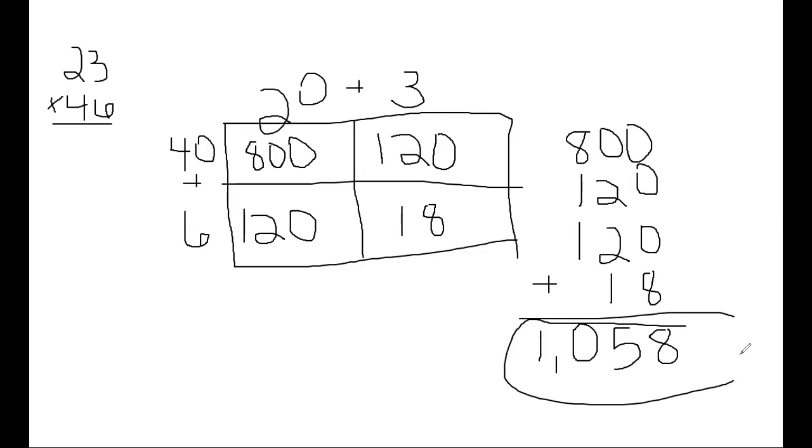So whenever you are doing your two digit by two digit multiplication, you can choose either the first method or you can use the area model method that I just showed you. Hope this helps that you are working on your two digit by two digit multiplication.